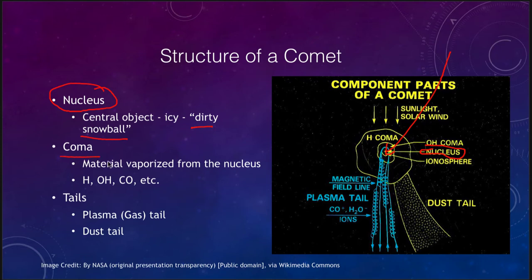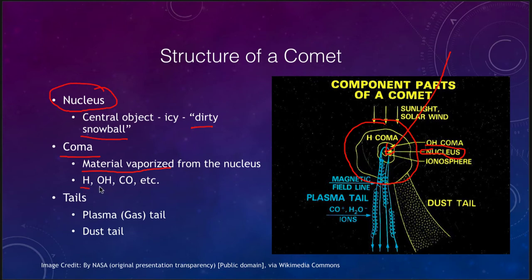We also have the coma of the comet, which is the larger area around the nucleus. Sometimes we see that as the head of the comet. That is where the material that has been vaporized from the nucleus resides. Some material is vaporized off this icy surface and then remains in a coma around the comet. That can include things like hydrogen, the hydroxyl molecule, carbon monoxide molecules, and various other compounds.